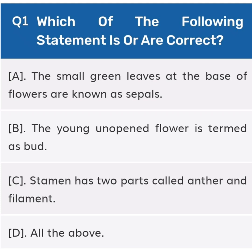First question from this quiz: Which of the following statements is or are correct? Option A: The small green leaves at the base of the flowers are known as sepals. Option B: The young unopened flower is termed as a bud. Option C: Stamen has two parts called anther and filament. Option D: All of the above.